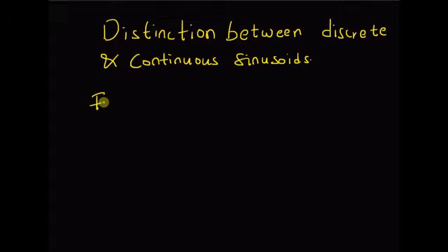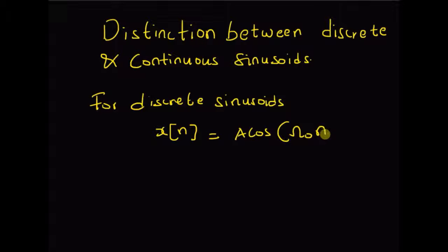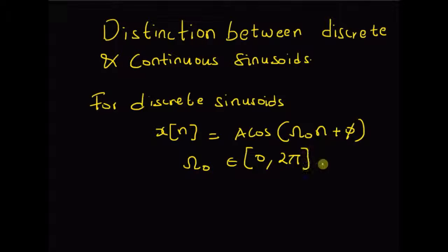For the discrete sinusoid, let us define the discrete sinusoid x of n as A times cos of omega naught n plus phase phi. Given this discrete sinusoid, the value of omega naught — that is, the frequency — belongs to the interval 0 to 2π, or −π to π.